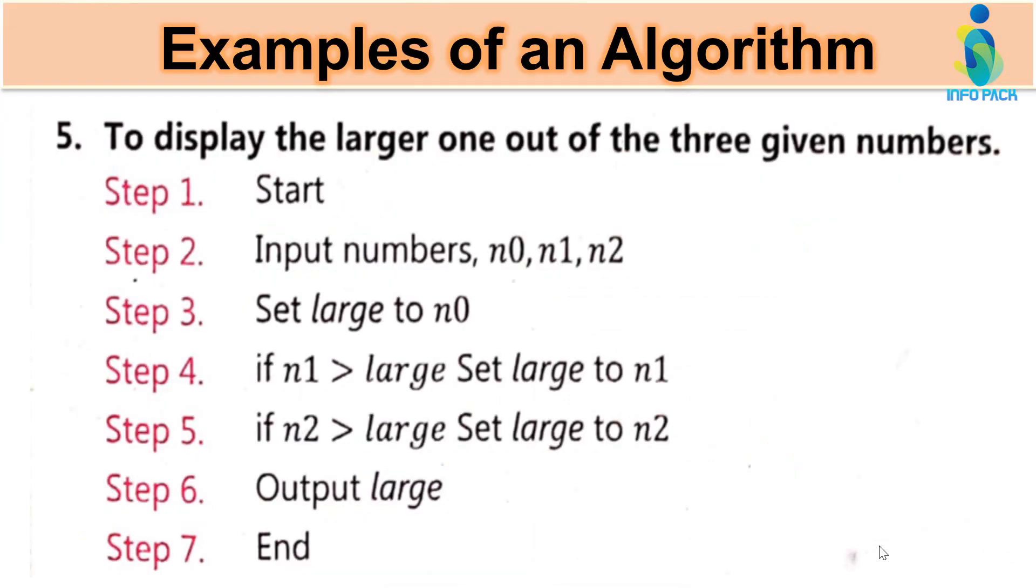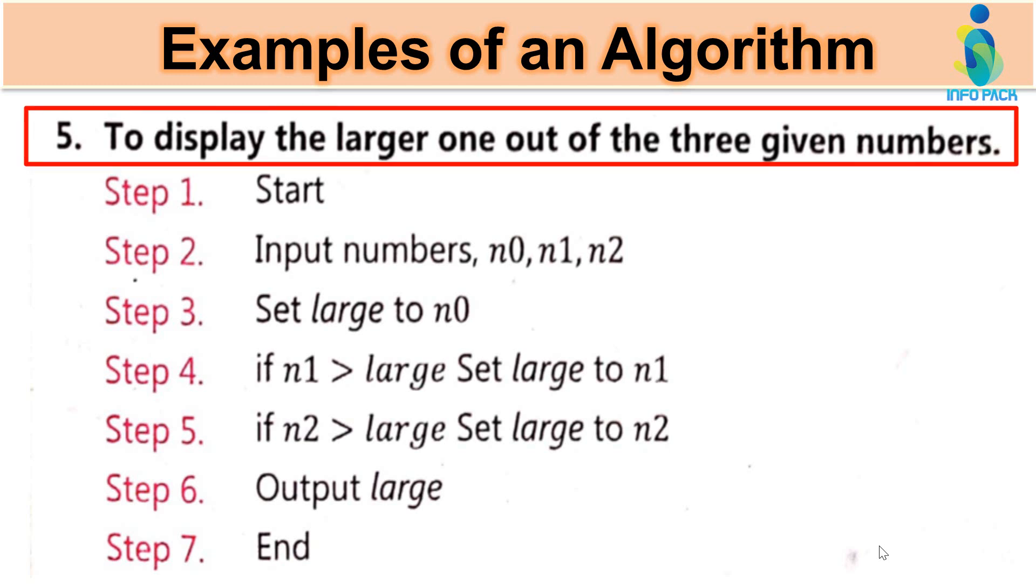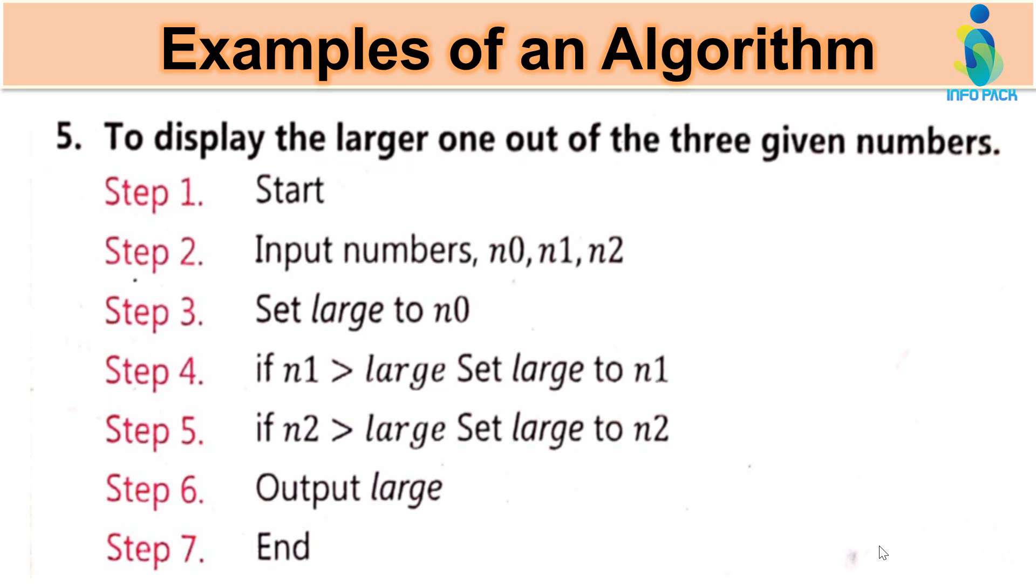In previous lecture we have discussed four examples of algorithm and today we will cover example number five. So let's start. Bismillahirrahmanirrahim. Example number five is write an algorithm to display the larger one out of the three given numbers. Means we have three numbers and we have to find which one is larger one.